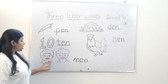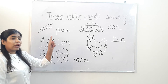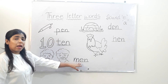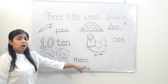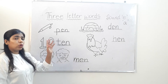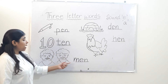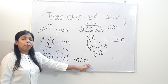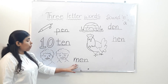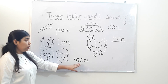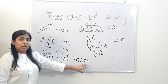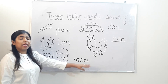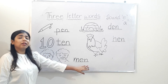See, if you are talking about one person or one man, we will write M, A, N. But when we are talking about two or more than two, then we will write M, E, N — men.